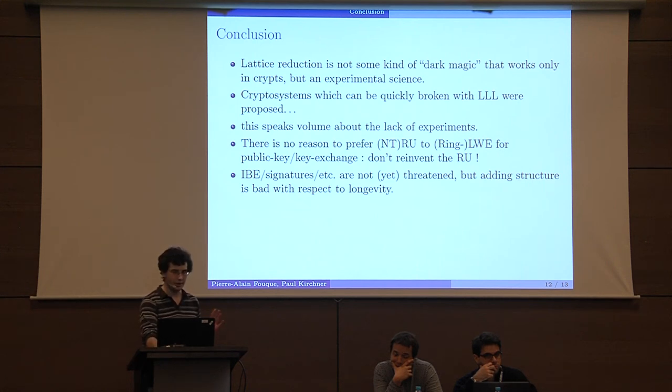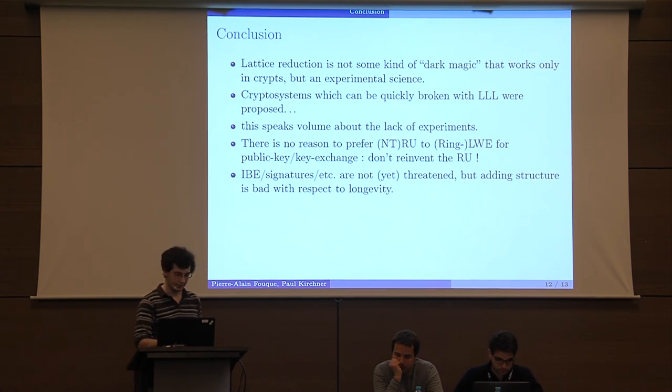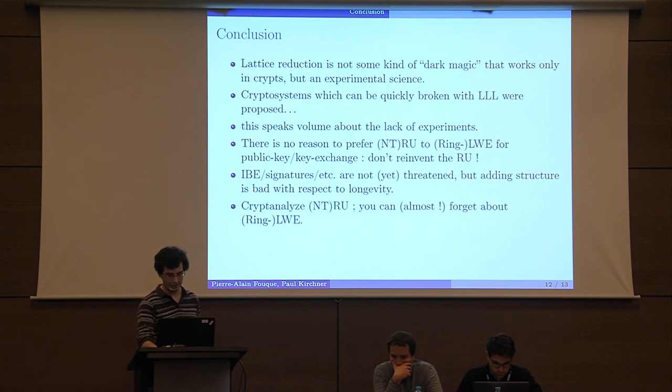They are not yet threatened because our limit exponent was around 2.8 and we need to go much lower, like 1.5 I think, to threaten anything. But in the general case, adding structure is bad with respect to longevity of cryptosystems. If you absolutely want to do it, then you should compare with alternatives based on ring LWE, I think. Also, you should cryptanalyze NTRU or root, and as far as cryptanalysis is concerned, you can almost forget about ring LWE.